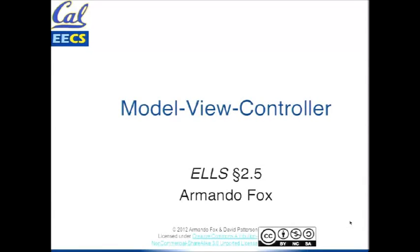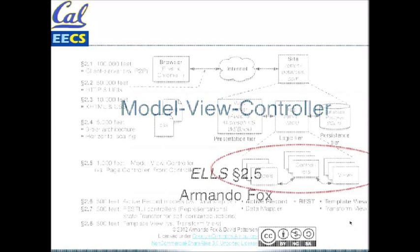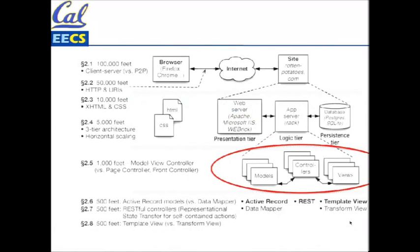Onward to the next topic. Going back to our diagram of these applications, we're going to go one more level of detail. We just finished talking about what these three tiers are, and now we're going to look inside the application server into the Model View Controller.